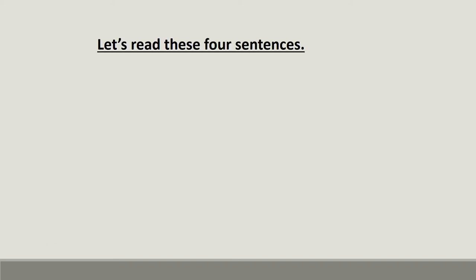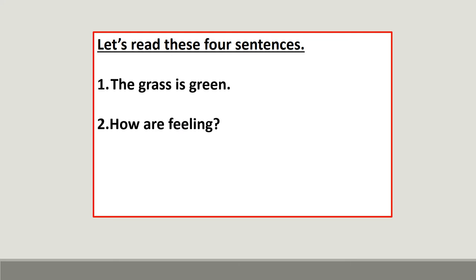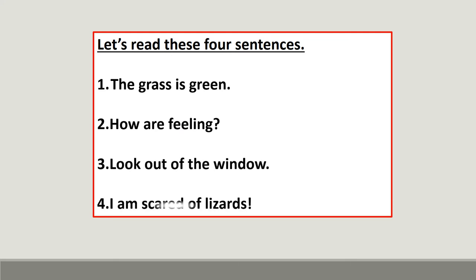Let's read these four sentences: 'The grass is green.' 'How are you feeling?' 'Look out of the window.' 'I am scared of lizards.' All these four sentences are different because they state different thoughts and feelings.